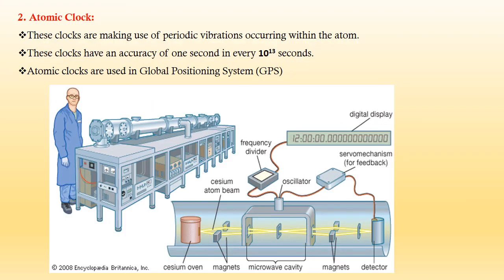Atomic clocks: These clocks make use of periodic vibrations occurring within the atom. These clocks have an accuracy of 1 second in every 10 to the power 13 seconds. Atomic clocks are used in Global Positioning System GPS.